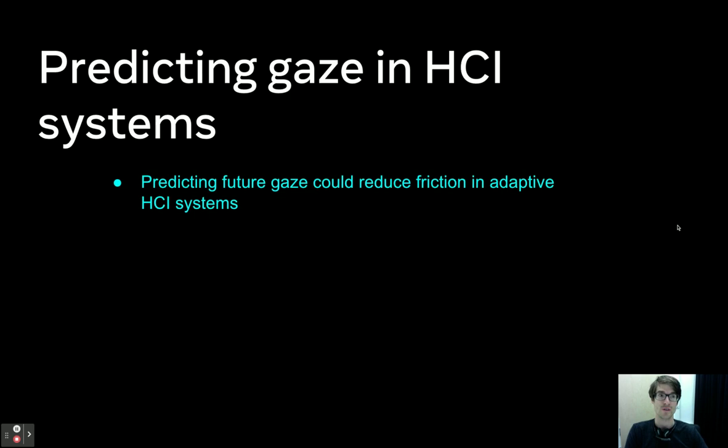Predicting attention can reduce the friction of interaction in adaptive computing systems. For example, it can switch the input of a keyboard to another device in advance, allowing for a smoother transition.